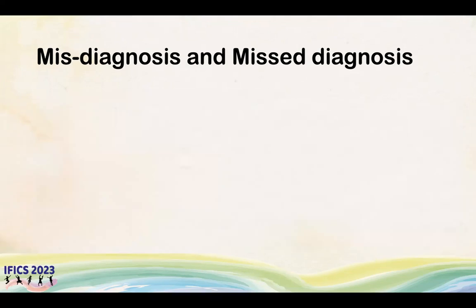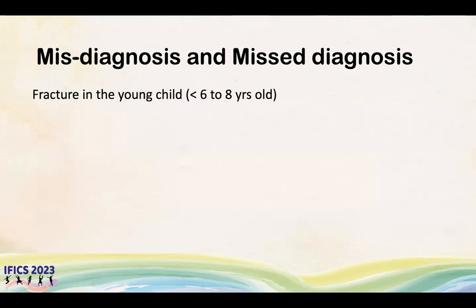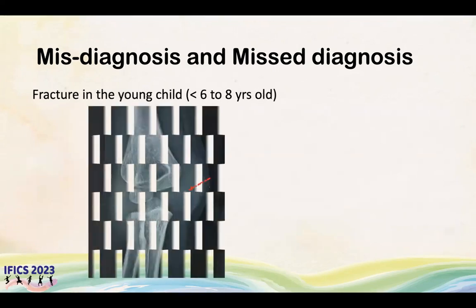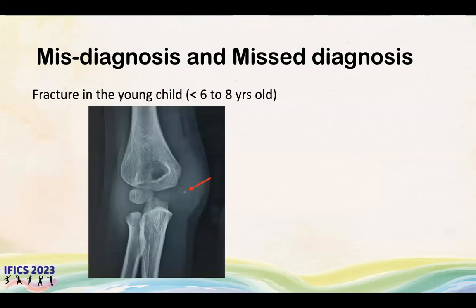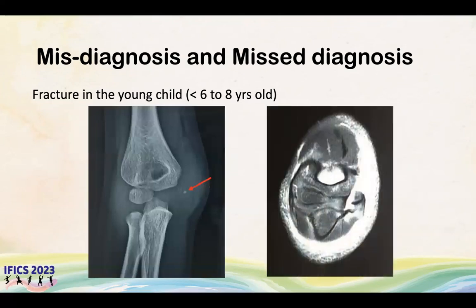The other scenario where medial epicondyle fracture diagnosis can be tricky is a fracture occurring in a very young child, less than six to eight years old. This X-ray is of a child about five years old and you can see there is a fragment that looks like a medial epicondyle fragment. However, in the very young child, medial epicondyle fractures are extremely rare. Advanced imaging will show the fracture fragment is actually much larger — it is a medial condyle fracture with intra-articular extension. Therefore, in this case, open reduction and anatomical fixation is absolutely mandatory.